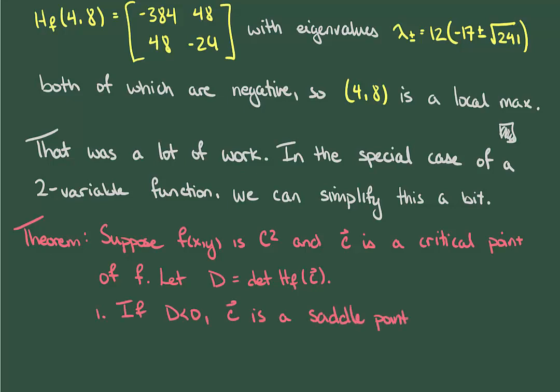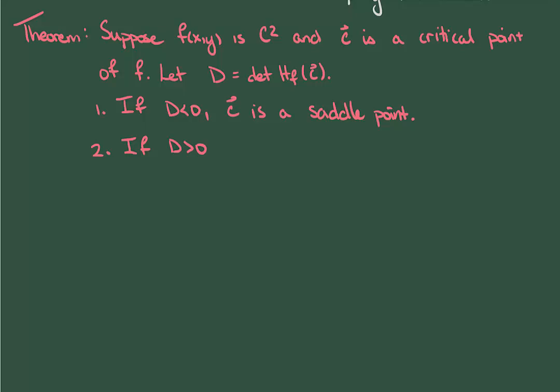If D is positive, well then we're going to have to look at the top left element of the Hessian, which we know is the xx derivative. If it's positive, then c is a minimum. And if it's negative, then c is a maximum. And if D is somehow zero, well then, again, we just don't know anything.